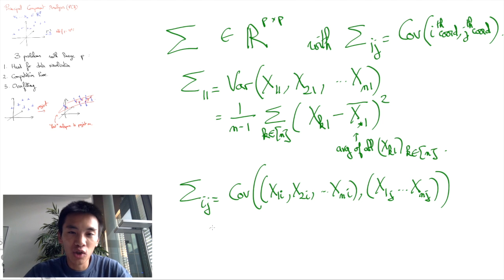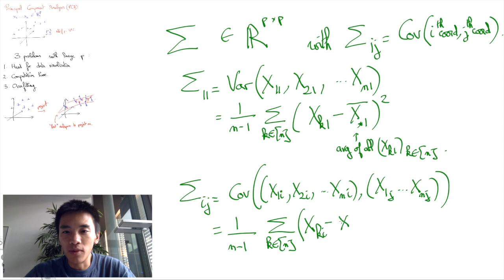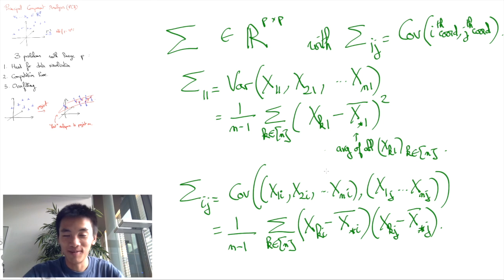This is computed with the classical formula of the covariance. Now these formulas can be a bit overwhelming—don't be overwhelmed by this.